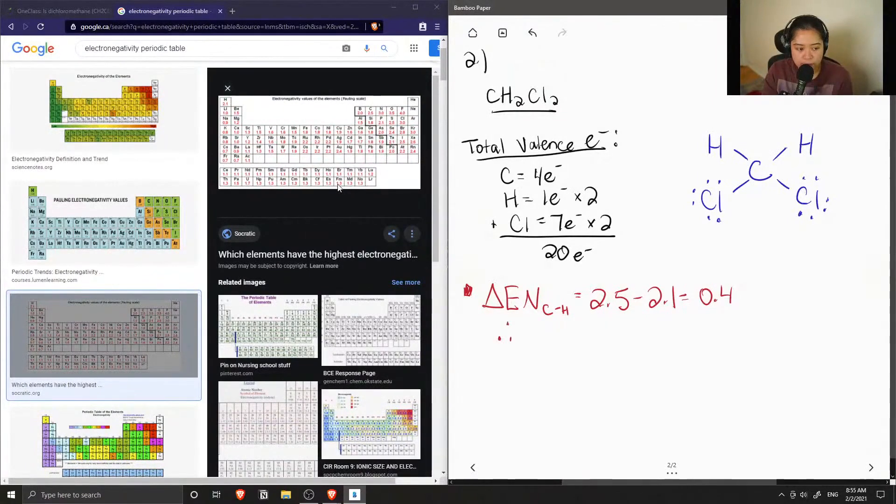So therefore, the carbon-hydrogen bond is nonpolar, and we know that because its difference in electronegativity is equal to 0.4.